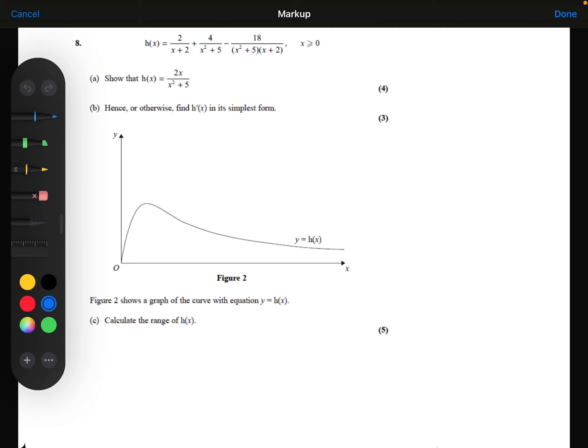H(x) is equal to 2 over x plus 2 plus 4 over x squared plus 5 minus 18 over x squared plus 5 times x plus 2. I need to show that that can be simplified to be 2x over x squared plus 5.